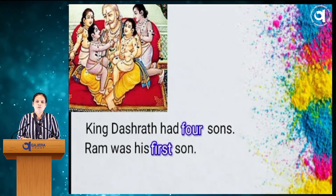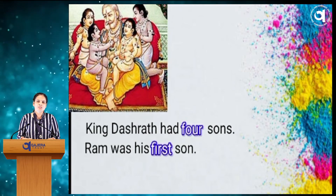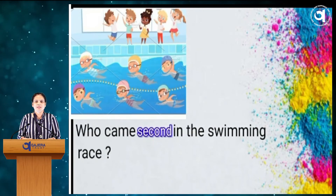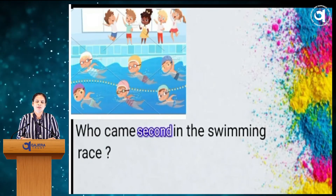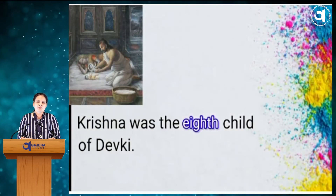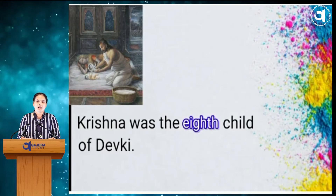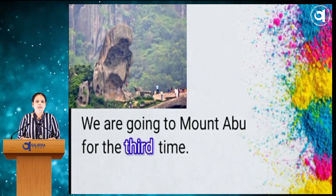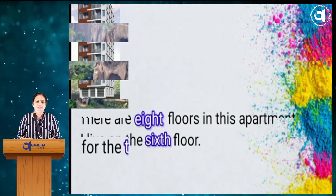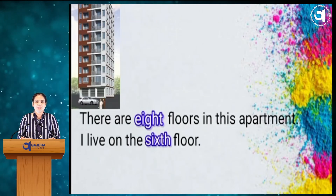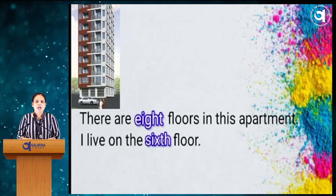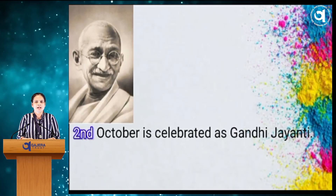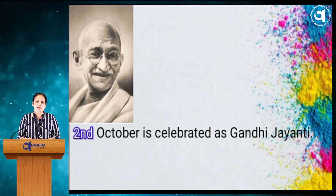King Dasrat had 4 sons — Raja Dasrat ne 4 putro hatha. Ram was his first son — Ram temna prathamputra hatha. Who came second in the swimming race? — Swimming race maa dhrutya krame kona abhiu? Krishna was the 8th child of Devki — Devki na 8 putra hatha. We are going to Mount Abu for the third time — aapne Mount Abu 3ja vakhat jai raya chiyeh.